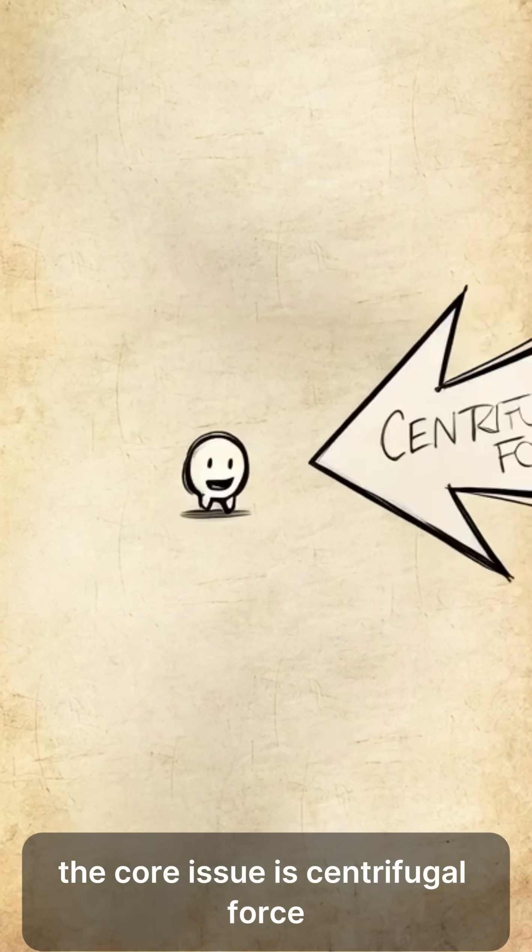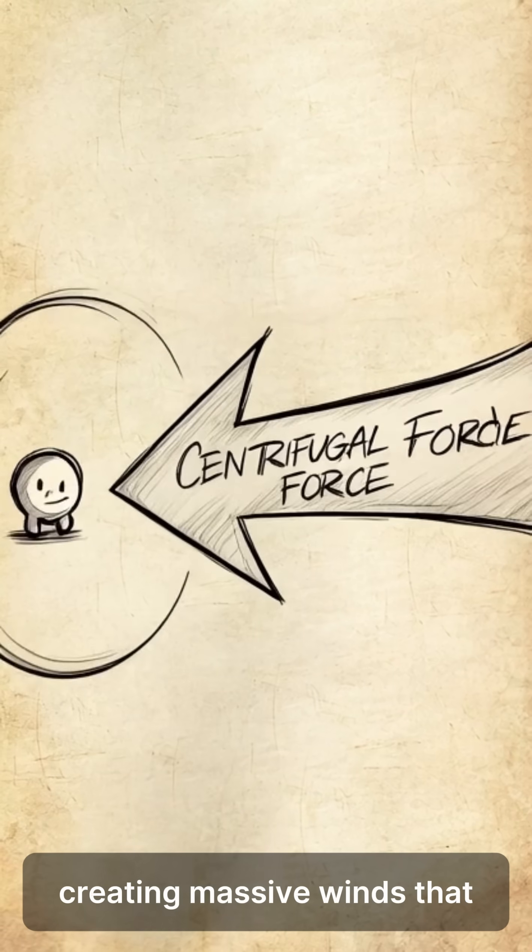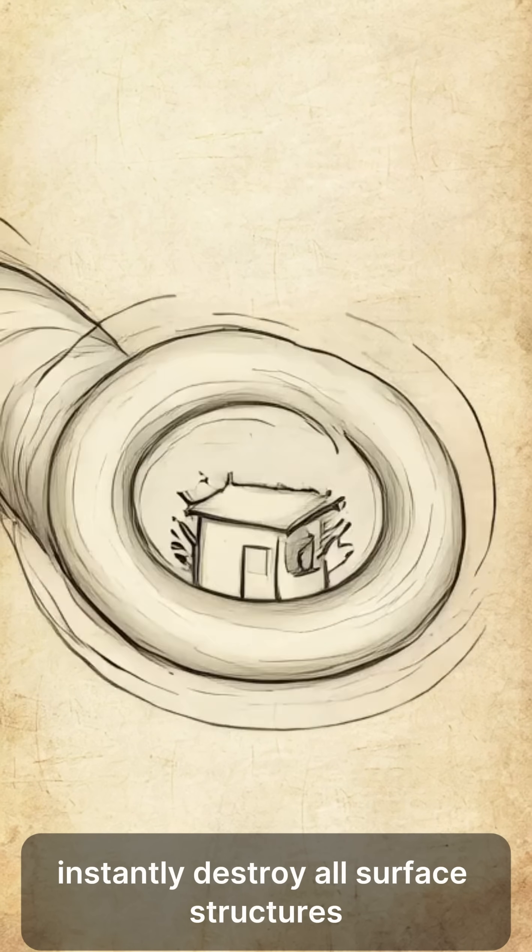The core issue is centrifugal force. At the equator, the surface speed would jump from 1,000 to 2,000 miles per hour, creating massive winds that instantly destroy all surface structures.